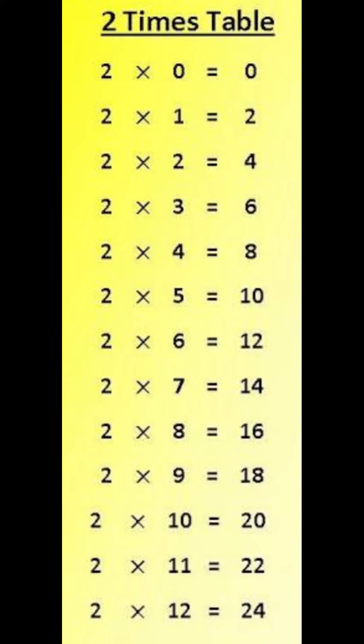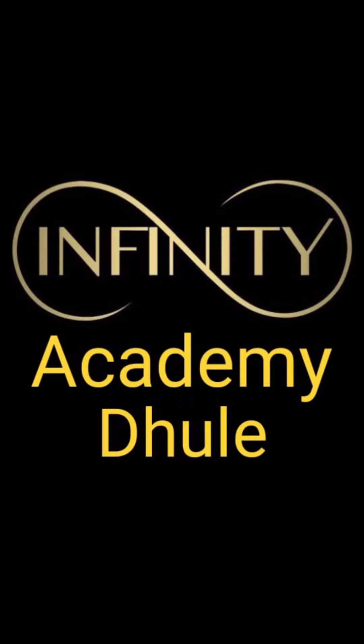2 ones are 2, 2 twos are 4, 2 threes are 6, 2 fours are 8, 2 fives are 10, 2 sixes are 12, 2 sevens are 14, 2 eights are 16, 2 nines are 18, 2 tens are 20, 2 elevens are 22, 2 twelves are 24. Thank you.